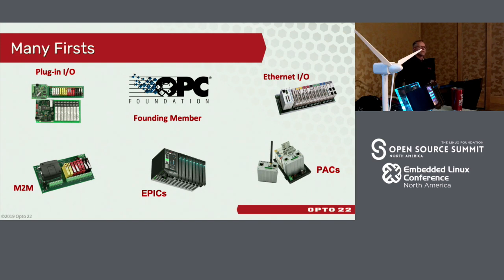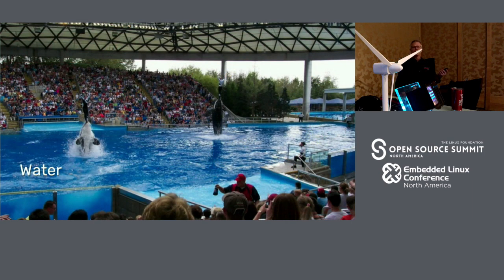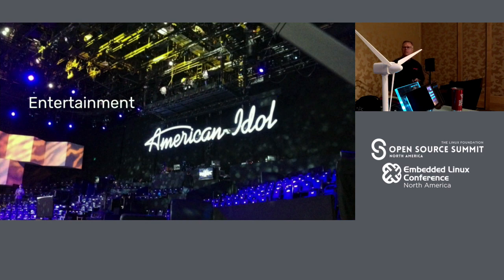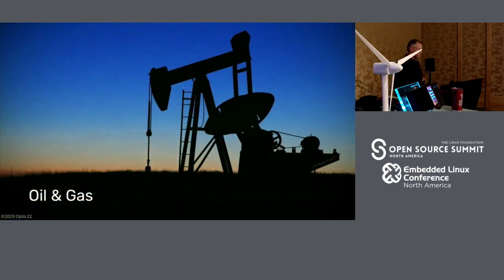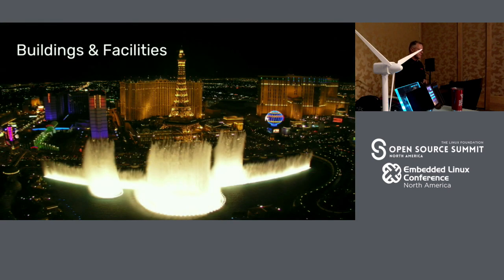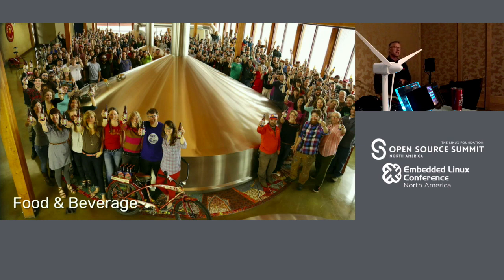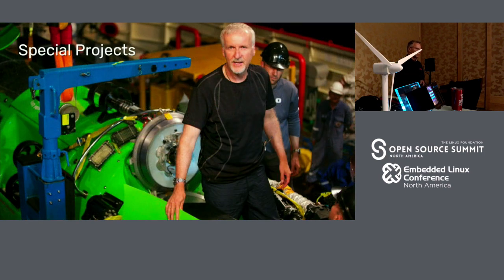The kinds of places and industries our products get placed into are very broad — from telecommunications to process control to water and wastewater plants. You've probably seen Opto at work if you've ever seen the Shamu show at SeaWorld, watched American Idol or Dancing with the Stars filmed at CBS Studios in L.A., flown in and out of major airports, pumped gas, or made a phone call. Opto 22 equipment is on over 10,000 cell towers across the United States and abroad. If you've seen the Bellagio fountains, that's Opto at work. If you've had a Fat Tire beer from New Belgium Brewery, whether it's the brewing process or bottling, you've seen Opto at work.